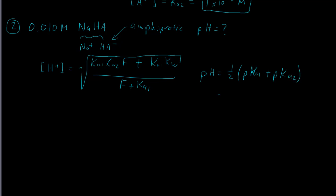That approximate formula is easy to use: pKa1 is 4 and pKa2 is 8, so we add them to get 12, and half of 12 is 6. We expect our pH to be 6, giving an H+ concentration of 10⁻⁶ molar. We would get a slightly different number using the exact equation.